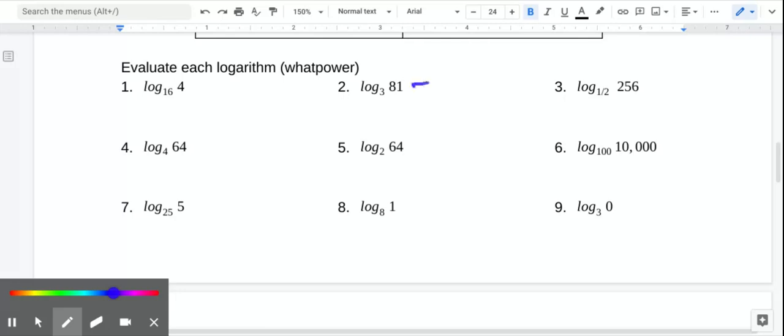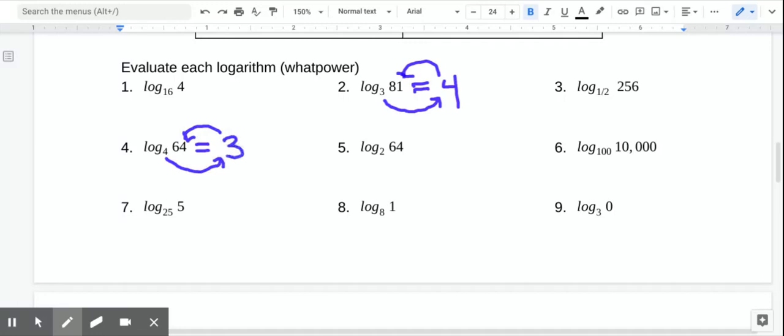I guess I'll pick this one. So what I'm thinking is 3 to what power gives me 81? If you need to use your calculator to try some stuff out, you can. But I'm pretty sure it's 3 to the 4th power equals 81. Let's try this one down here. So I'm thinking 4 to what power gives me 64? I'm pretty sure it's 4 to the 3rd.